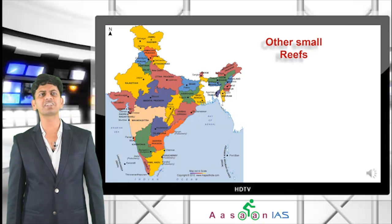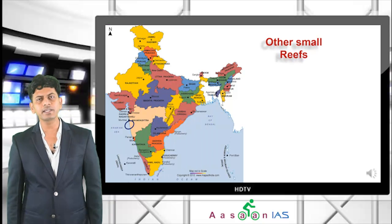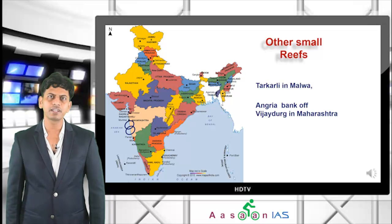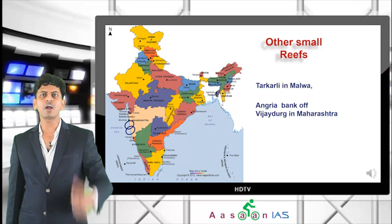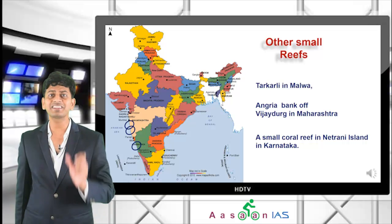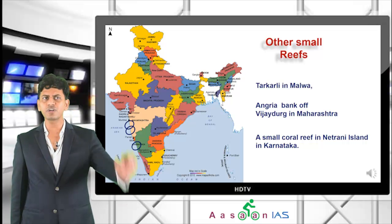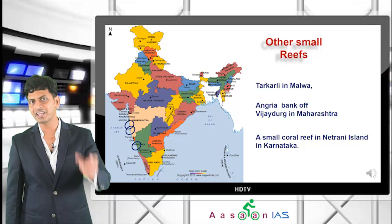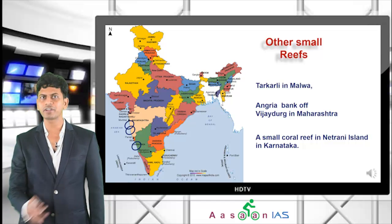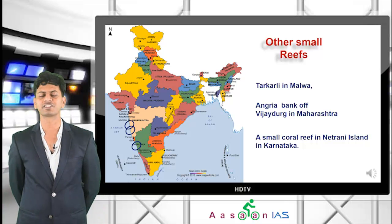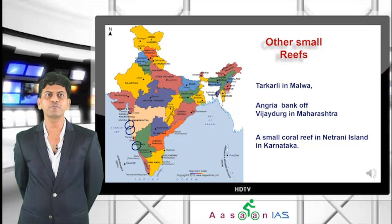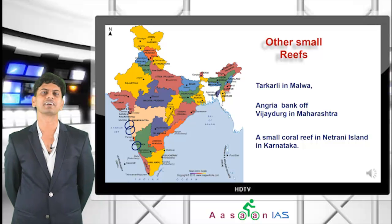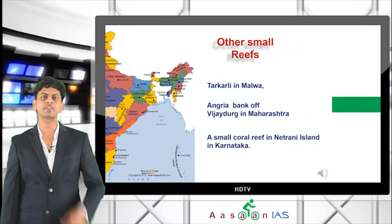On the western coast, small coral reefs are found at Tarkarli in the Malvan region of Maharashtra, Vijaydurg in Maharashtra, and Netrani Island in Karnataka. No coral reefs, even small ones, are found on the eastern side other than in the Gulf of Mannar, due to fresh water from east-flowing rivers. The largest reef in the world remains the Great Barrier Reef in Australia.